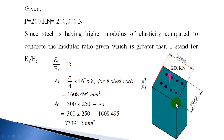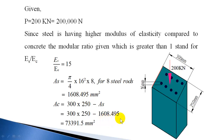The total cross-sectional area of the column is 300 mm × 250 mm. However, steel occupies some of that area, so subtract the area of steel to get the area of concrete. Total area of pillar minus area of steel: 300 × 250 − 1608.495 = 73,391.5 mm². So concrete occupies a much larger area than steel.